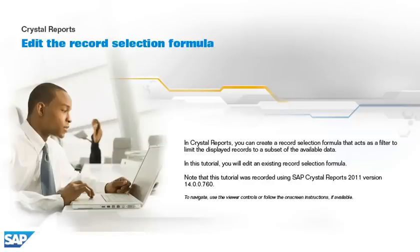In Crystal Reports, you can create a record selection formula that acts as a filter to limit the displayed records to a subset of the available data. In this tutorial, you will edit an existing record selection formula.